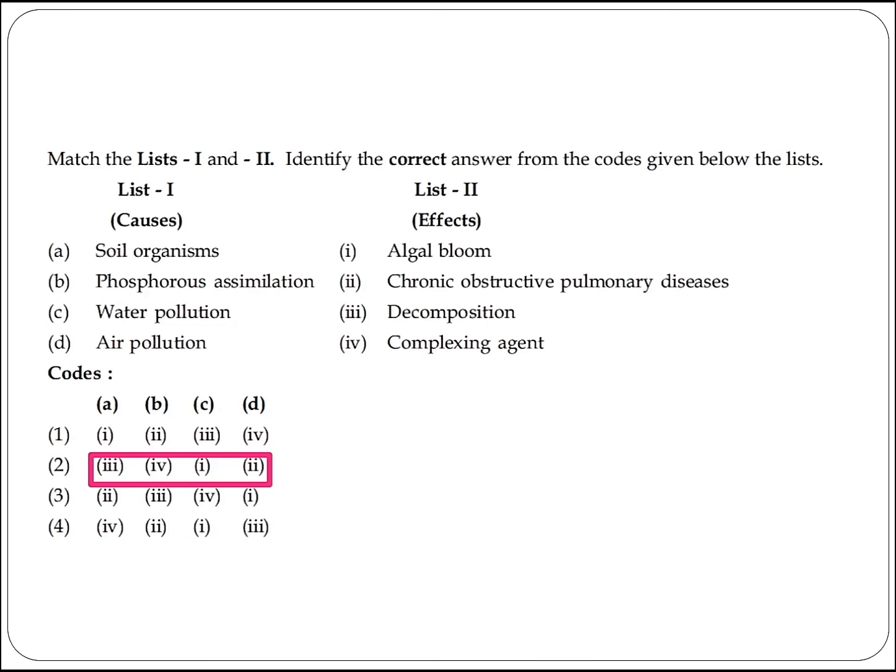The next question asks to match List 1 and List 2 to identify the correct answer from the code given below. List 1 includes: soil organism decomposition, phosphorus assimilation, complexing agent, water pollution causing algal bloom, and air pollution causing chronic obstructive pulmonary disease. Option 2 is the right answer.